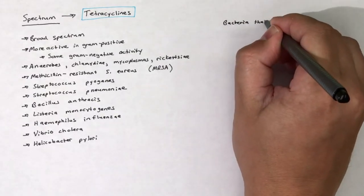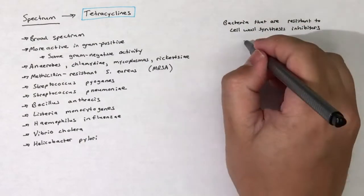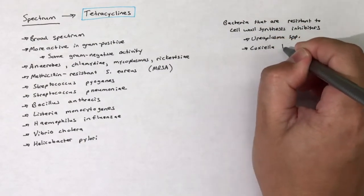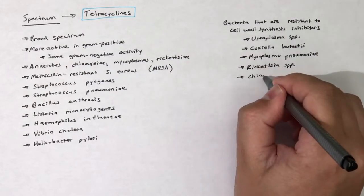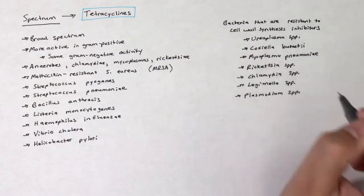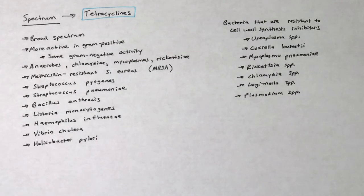Tetracyclines are also active against some bacteria that are resistant to cell wall synthesis inhibitors. These include Ureaplasma species, Coxiella burnetii, Mycoplasma pneumoniae, Rickettsia species, Chlamydia species, Legionella species, and Plasmodium species.